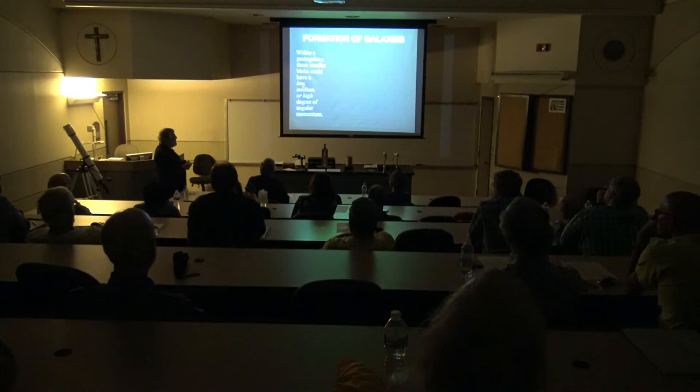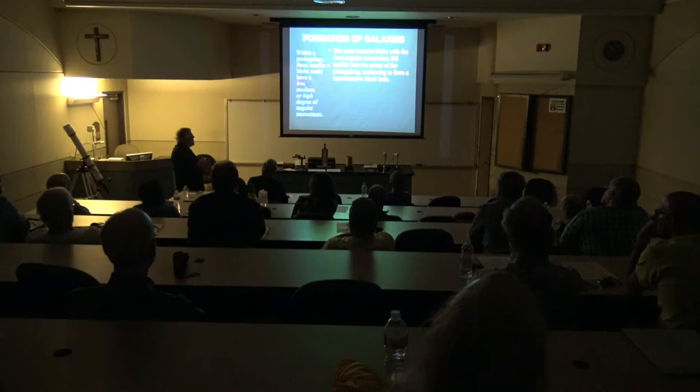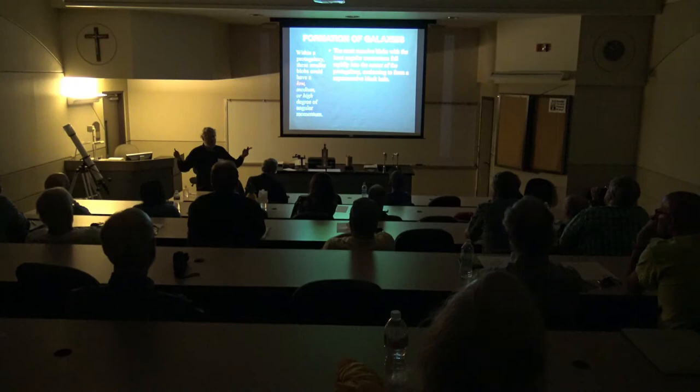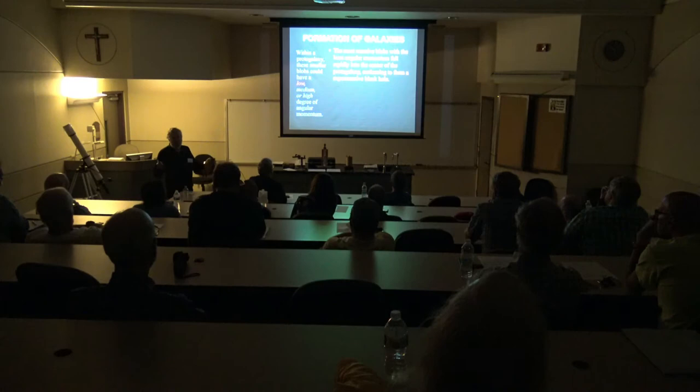Within a proto-galaxy, blobs could have low, medium, or high angular momentum because everything was turbulent. The ones with the least angular momentum fell into the center — gravity of the whole proto-galaxy pulled them right in — where they coalesced to form a supermassive black hole of millions or billions of solar masses right in the middle.